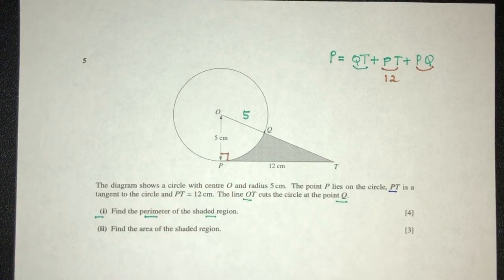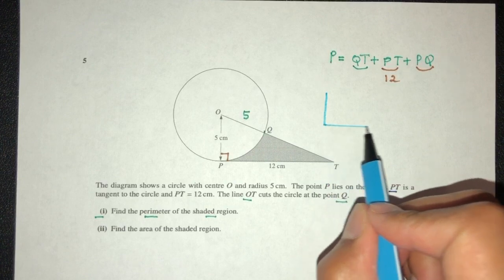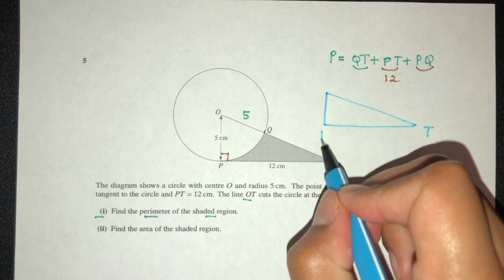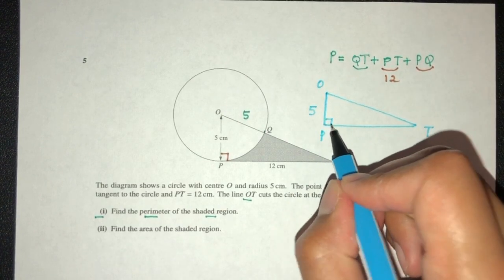But let's take out the triangle that we can see here. We have this triangle. So we have T here. We have P here. We have O here. This is 5. This is 90. And this is 12.